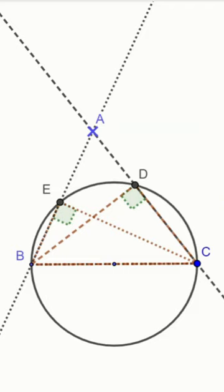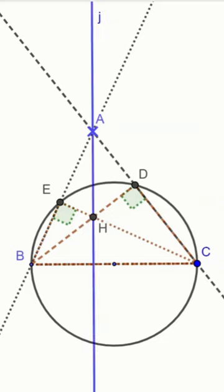So, CE and BD are two altitudes of triangle ABC. Therefore, point H is the orthocenter of triangle ABC, and thus the third altitude passes through A and H, being perpendicular to BC.